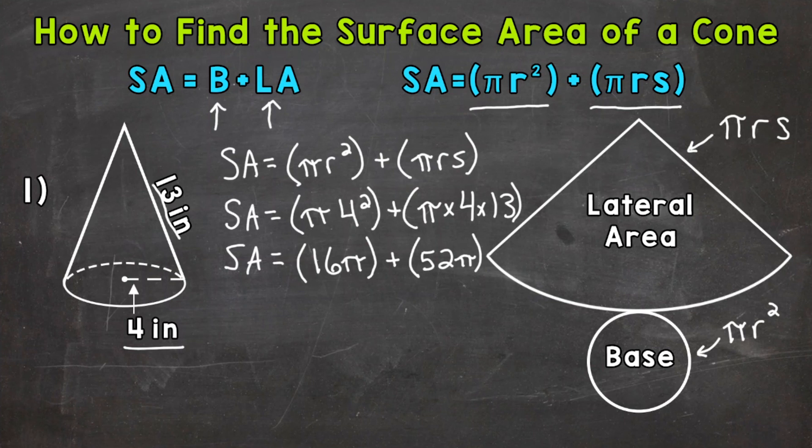Now we can add our whole numbers together and combine our pi's. So we have surface area equals 68 pi. And that's our answer in terms of pi. 68 pi is going to be the surface area of that cone.